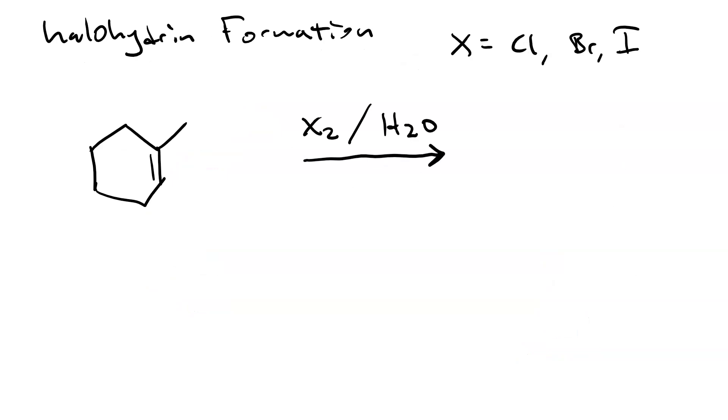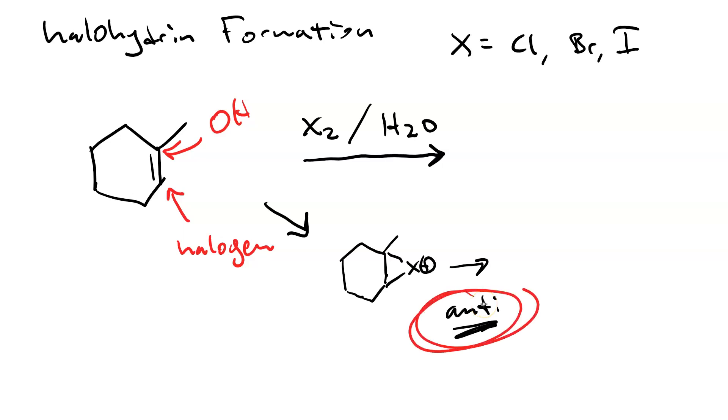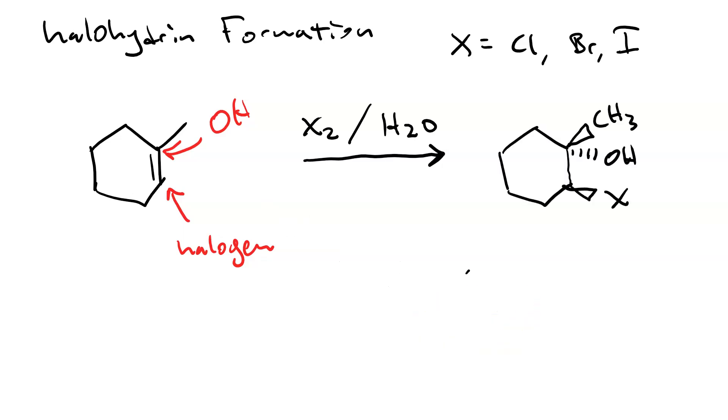When you use a halogen molecule, Cl2, Br2, or I2, but your solvent is water, then you get halohydrin formation, where your halogen adds here, and your hydroxyl adds to the more substituted. Again, you go through the halonium intermediate, so you get anti-addition. So you get two products that are anti, the one that is pictured and its enantiomer.